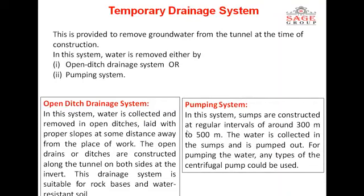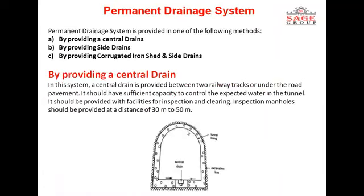The open ditch and pumping systems are both useful for temporary drainage during construction. Once construction progresses, it becomes necessary to plan for the permanent drainage system. Permanent drainage systems are provided in three types: first, by providing central drains; second, by providing side drains; and third, by providing corrugated iron shed and side drains.